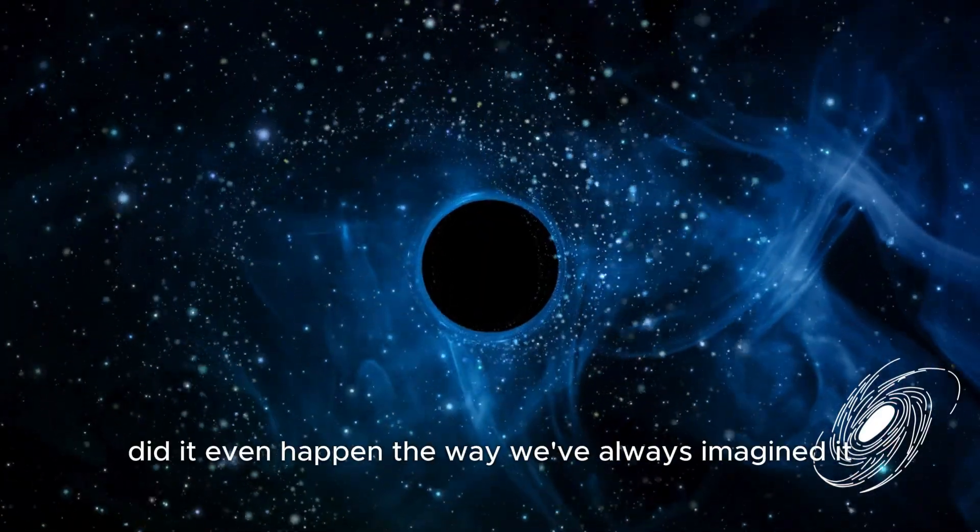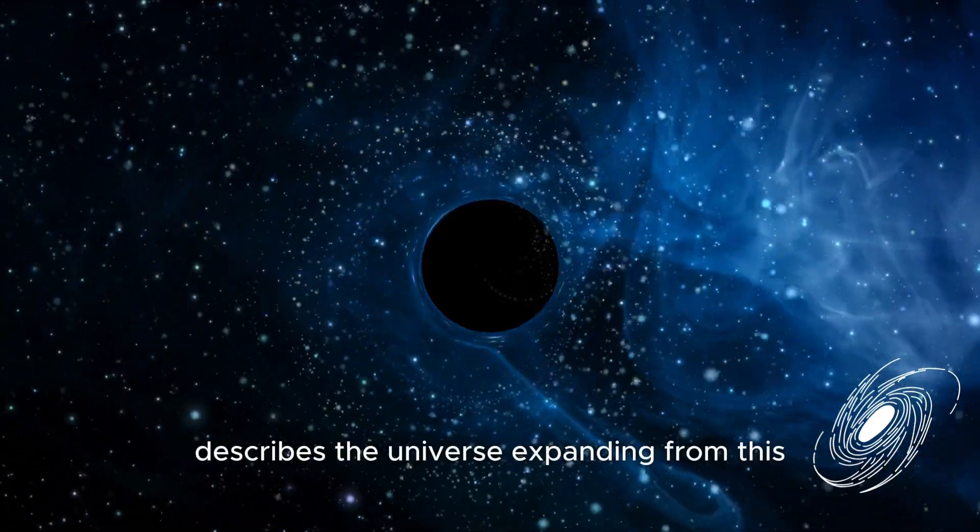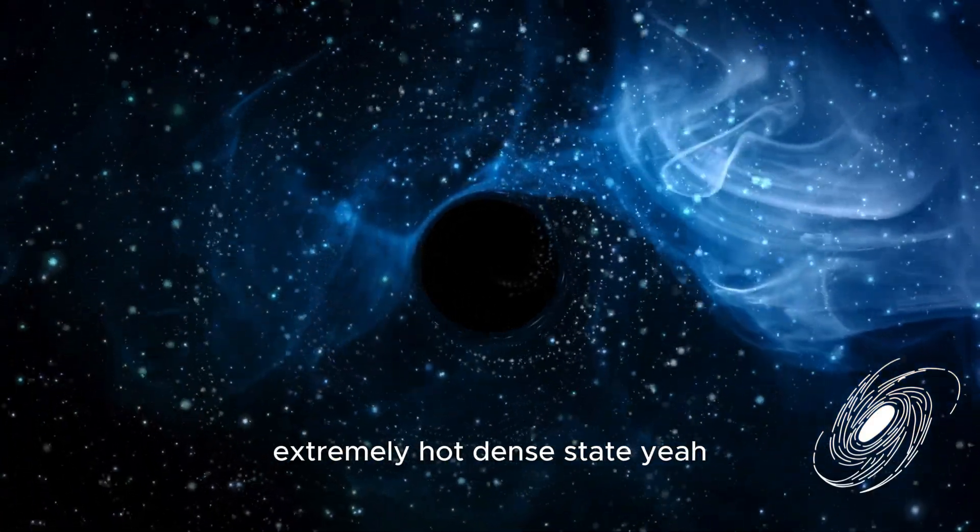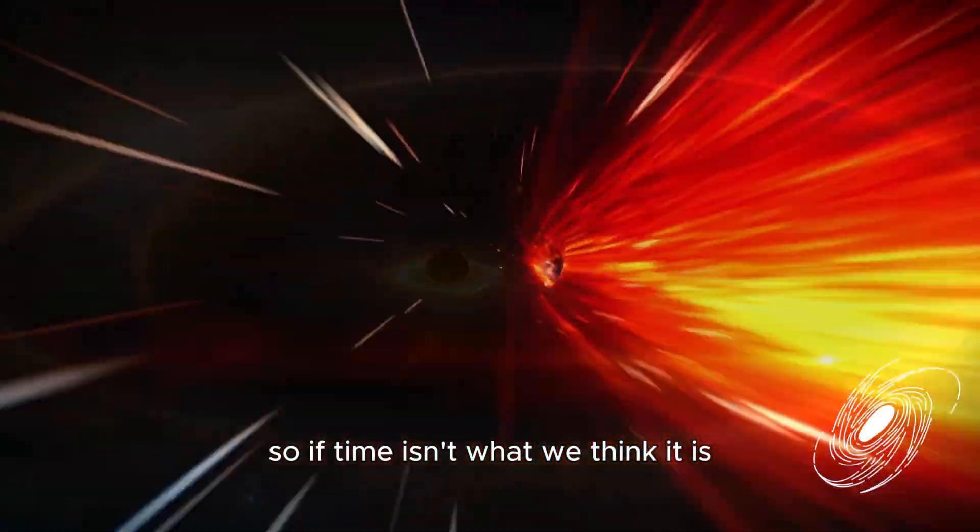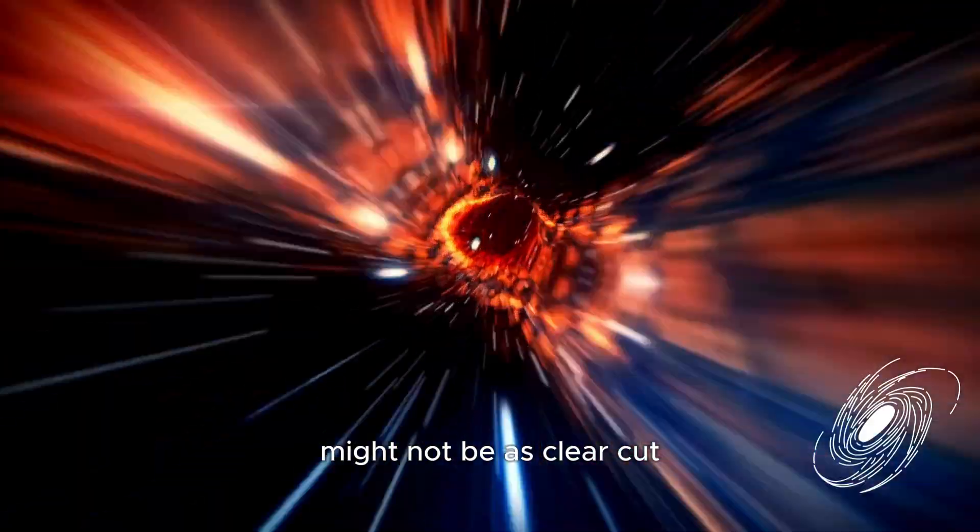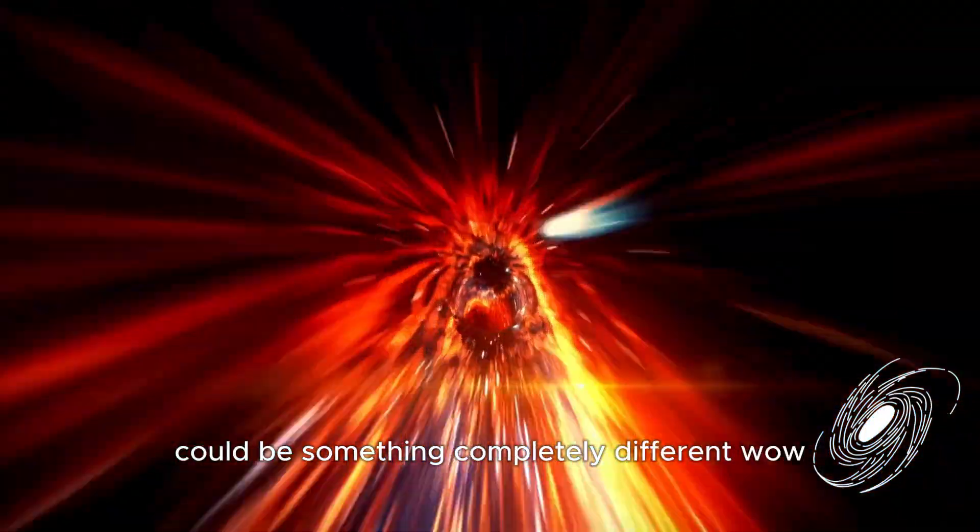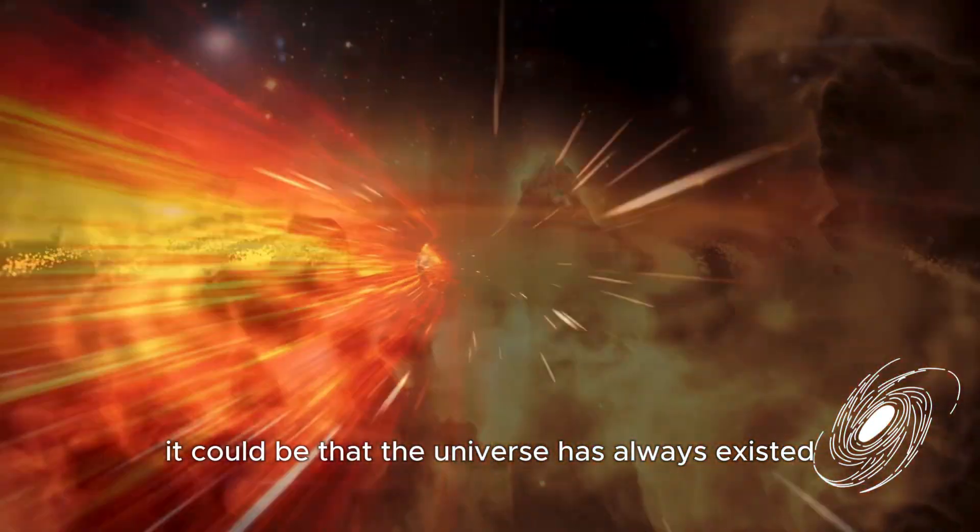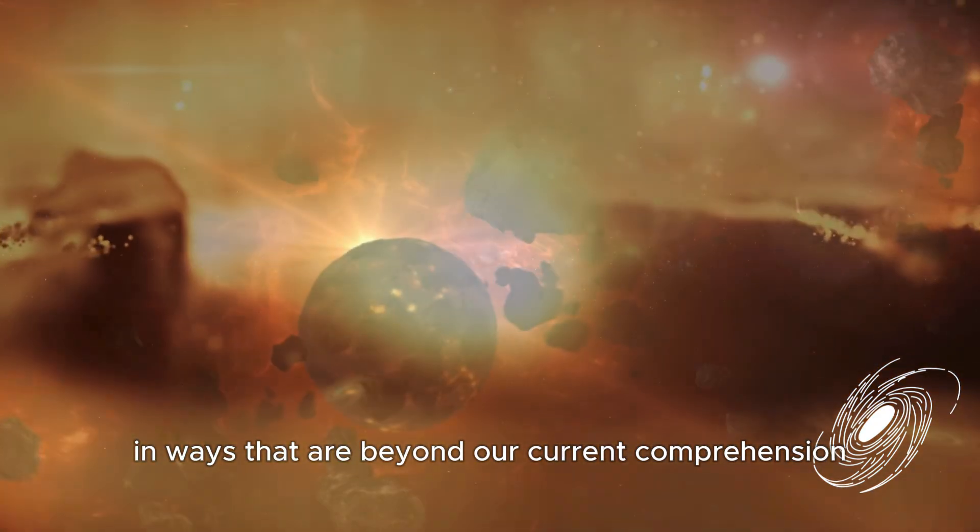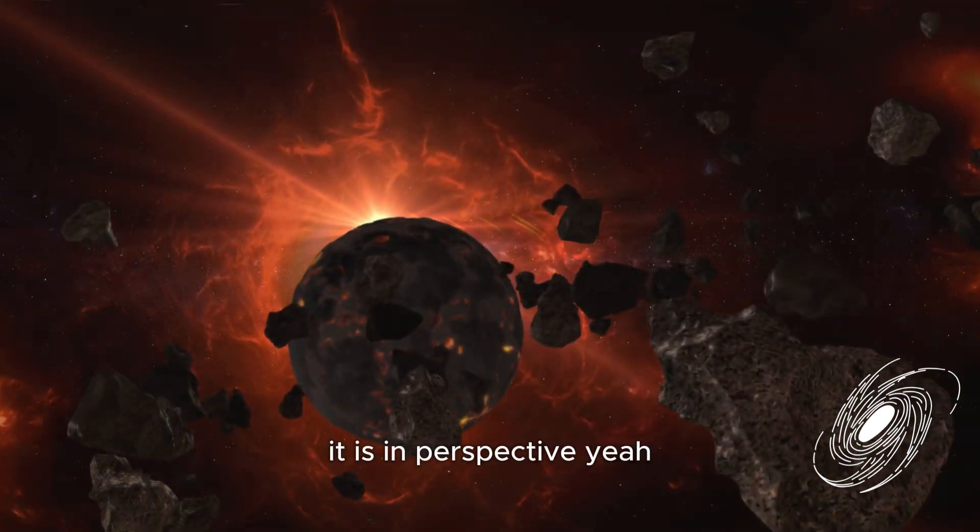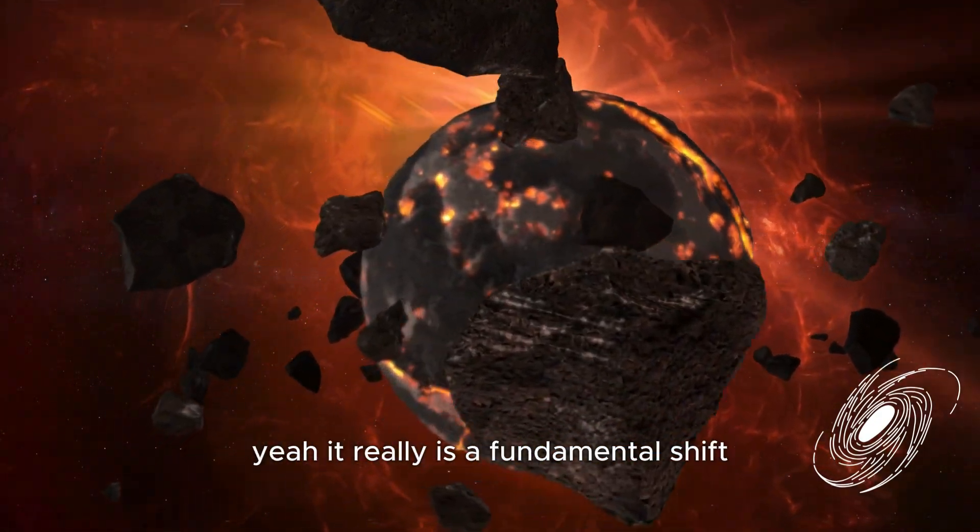But if that's the case, what does it mean for all the things we thought we knew about the universe? Like the Big Bang. Did it even happen the way we've always imagined it? That's the really intriguing part. The Big Bang theory describes the universe expanding from this extremely hot, dense state. But it relies on our current understanding of time. So if time isn't what we think it is, then that initial bang might not be as clear cut as we once thought. So instead of a universe exploding outwards from a single point, it could be something completely different. It could be that the universe has always existed in some form, constantly evolving and changing in ways that are beyond our current comprehension.